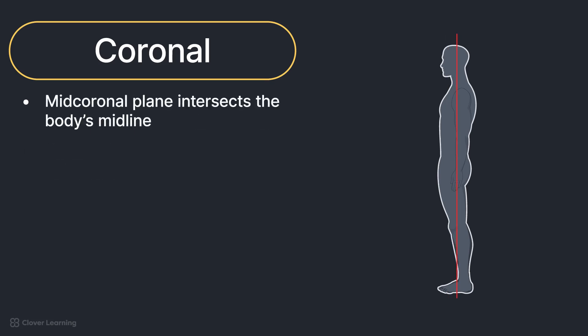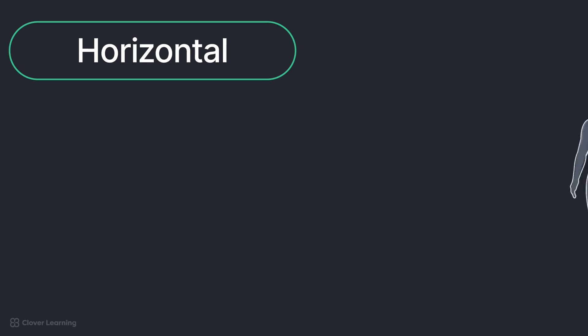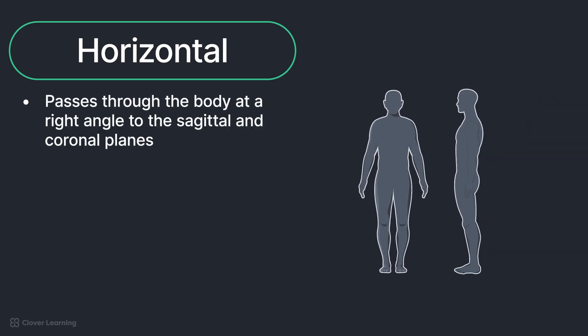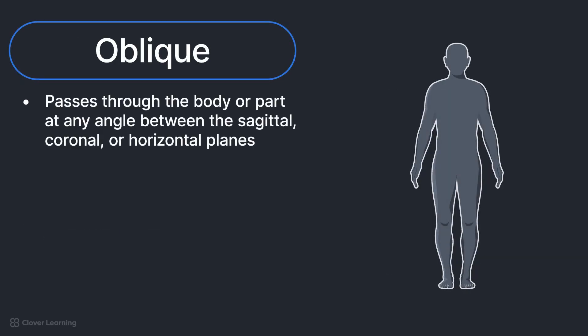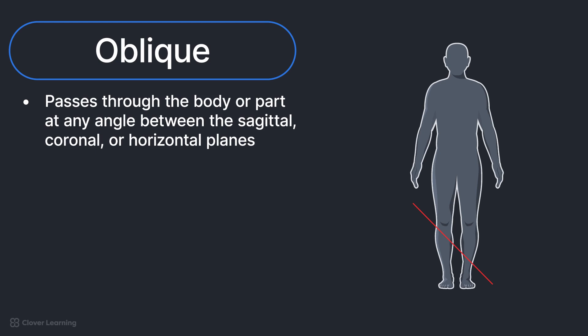The horizontal plane passes through the body or a body part at a right angle to the sagittal and coronal planes, dividing the body into superior and inferior portions. This plane is also referred to as the axial, transverse, or cross-sectional plane. You can think of this as dividing the body into slices, like a loaf of bread. The oblique plane passes through the body or a body part at any angle among the previous three.